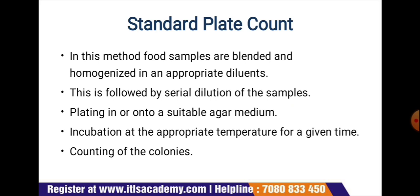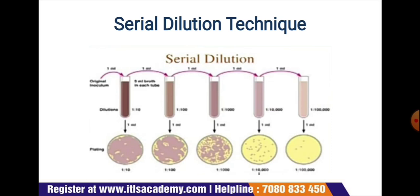In the standard plate count method, food samples are blended and homogenized in an appropriate diluent. This is followed by serial dilution of the samples and then plating in or onto a suitable agar medium, after which incubation at appropriate temperature for a given time is performed, and finally colonies are counted. In the serial dilution step, one milliliter is taken from the original sample and transferred to the next test tube, diluting to 10 times, 100 times, 1,000 times, 10,000 times, and so on.